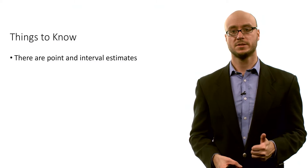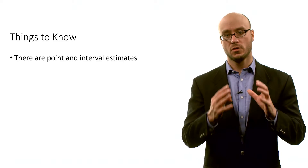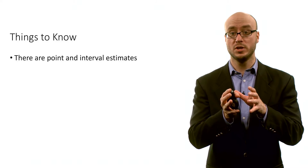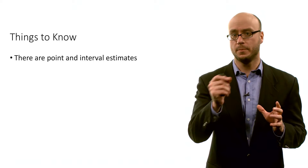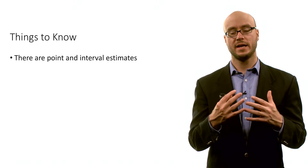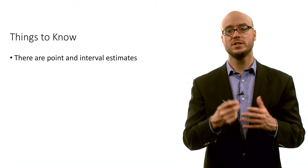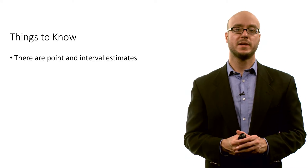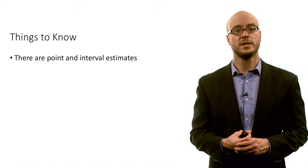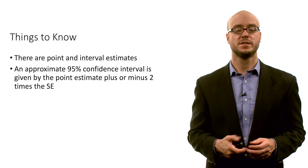A few key things to know about interval estimates and confidence intervals. We have point estimates and interval estimates. A point estimate is our single best guess for some population parameter in the absence of additional information. For the population mean mu, our point estimate is simply our sample mean x-bar. An interval estimate gives a range of plausible values — sometimes it's useful not just to have a point estimate but a range of values to make some generalization from a sample to a population. An approximate 95 percent confidence interval is given by the point estimate plus or minus two times the standard error.